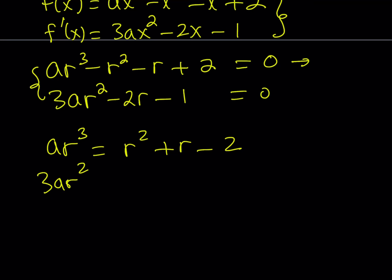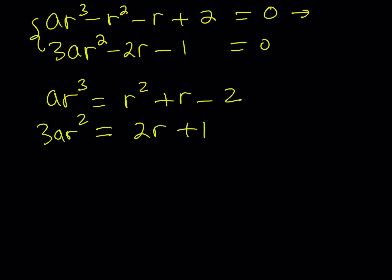I can write this as ar³ = r² + r - 2, and then from the second equation I want to isolate 3ar² and that can be written as 2r + 1. Now I want to get rid of a or r, but getting rid of r is really difficult, maybe impossible, but I can get rid of a easily by using elimination.